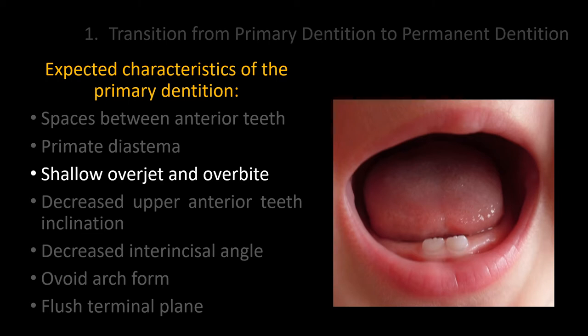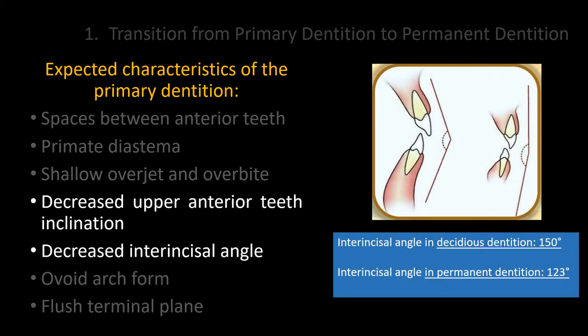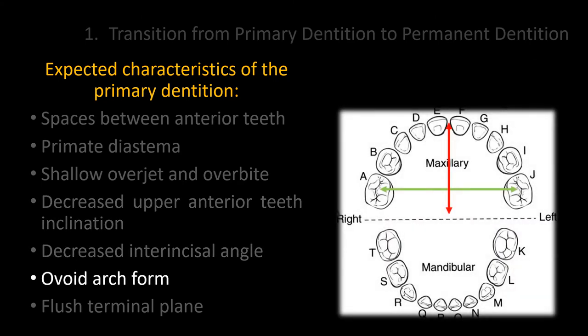The overjet and overbite are more shallow compared to the permanent dentition. The upper incisors are more retroclined compared to their permanent counterparts, resulting in a decreased interincisal angle. The arch form is ovoid, and the anterior-posterior dimension of the arch is shorter compared to the transversal width.